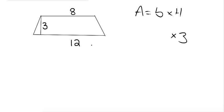In order to do this, what you do is you add the bases, 8 plus the 12, and you get 20, and you find the average of those two, so you do 20 divided by 2, which is 10.